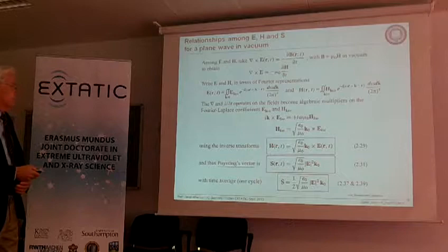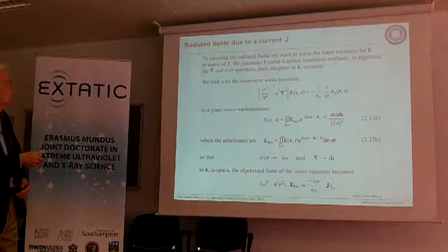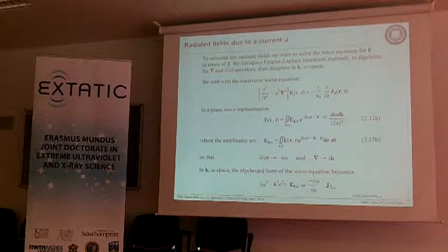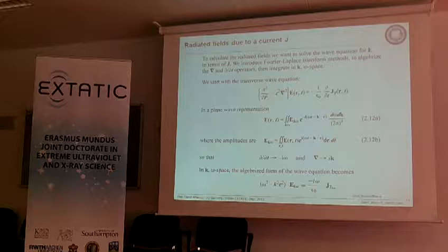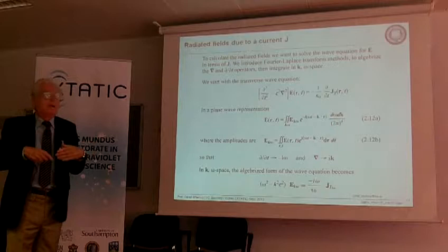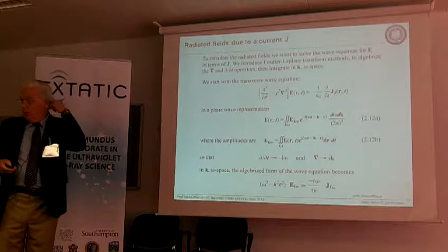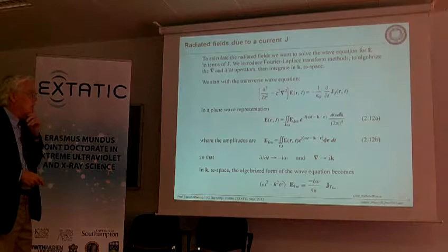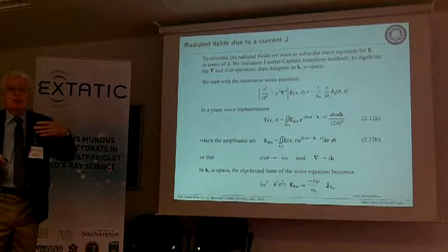Now: what are the radiated fields due to a certain current? We have a charge that's going to oscillate — there's a current density, an acceleration, a velocity, a J-dot — and it's going to radiate. We want to find out how much power it radiates, and this is how we get the cross section. We go back to Maxwell's equations and calculate E. We need J, which is NQV, and use that to solve for E. The approach is to switch from real space to K-omega space.